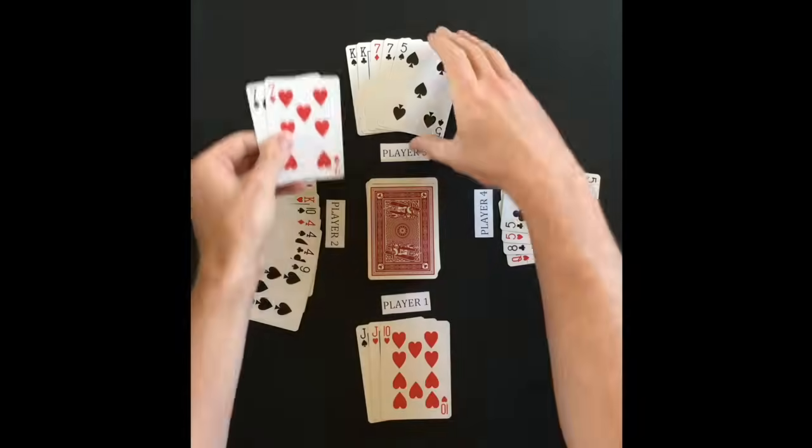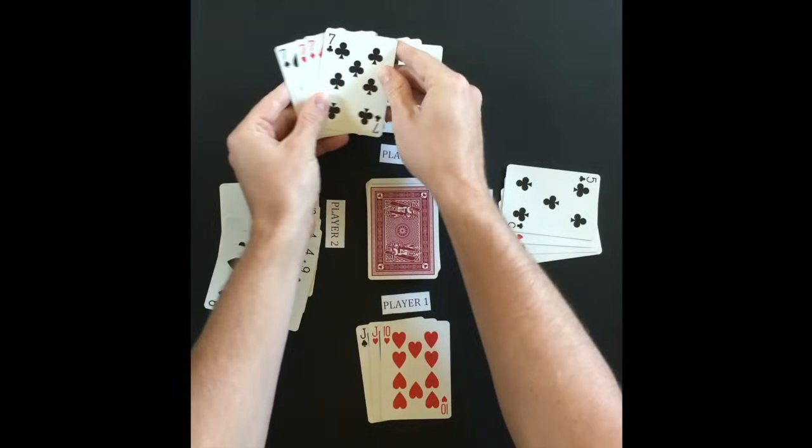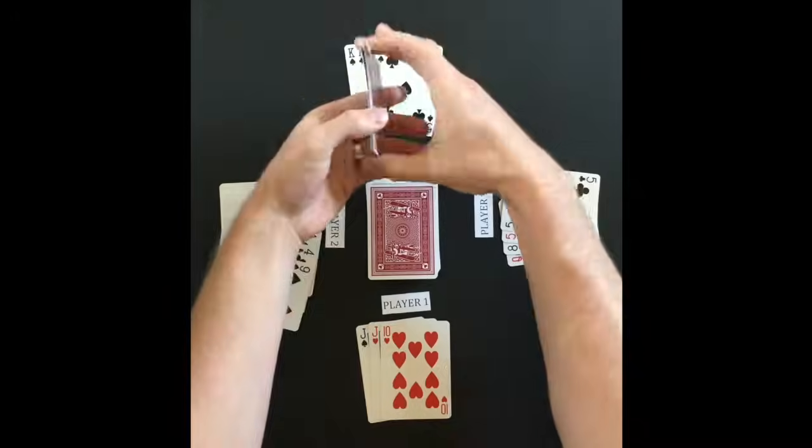The object of the game is to get the most four of a kinds. Once a player has a four of a kind, the cards are laid down.